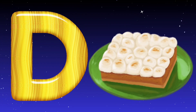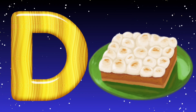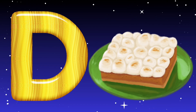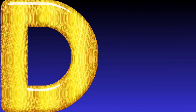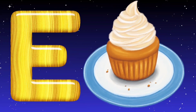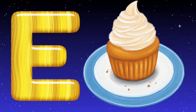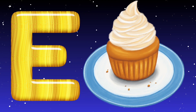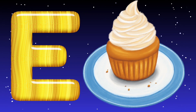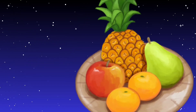D. D is for donuts. Urdu mein donuts. E is for egg cake. Urdu mein egg cake.